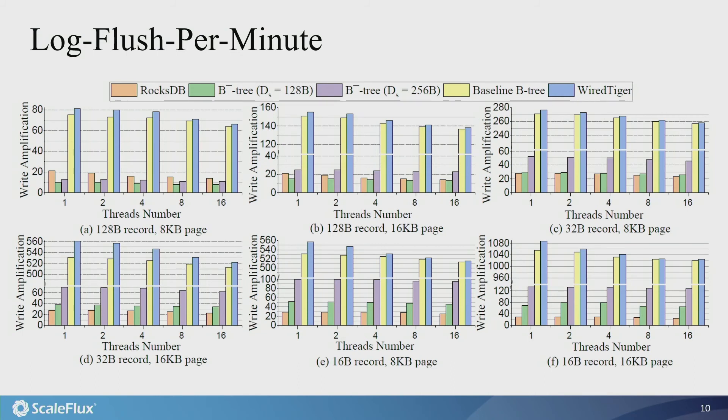As the number of client threads increases, the write amplification of normal B+ tree noticeably reduces because of the larger probability of page flush collision under higher workload concurrency. In comparison, the write amplification of B-minus tree is much more weakly dependent on the number of client threads, because the probability that different client threads modify the same segment inside a page is much smaller than the probability that different client threads modify the same page.